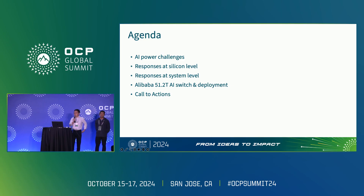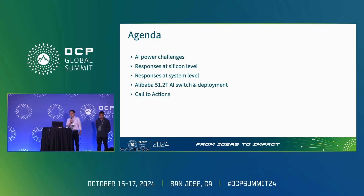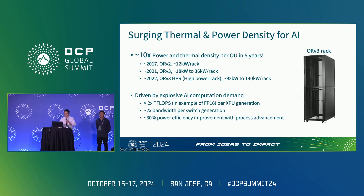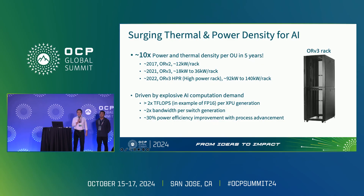I'm going to start by talking about the AI power challenge we are facing today, then share some thoughts on how to tackle it from the silicon perspective. Then Fengbo is going to talk about their design philosophy on the AI switch and share some test data and deployment experience. One year ago, people were talking about megawatt data centers, and just a few months later, we started to hear about gigawatt data centers being built by multiple hyperscalers powered by nuclear energy.